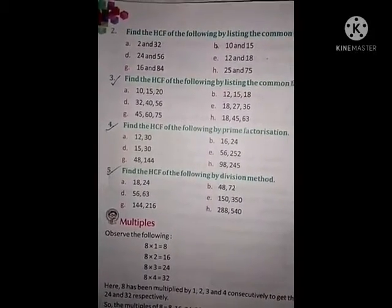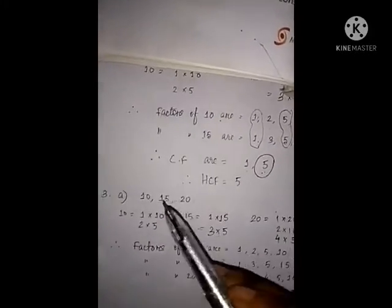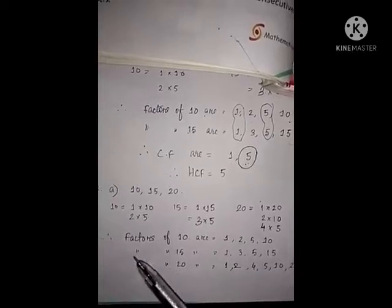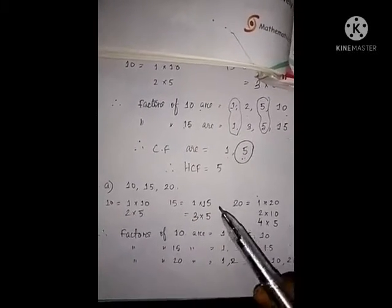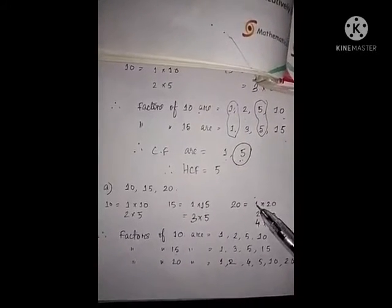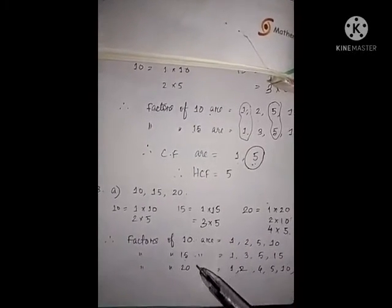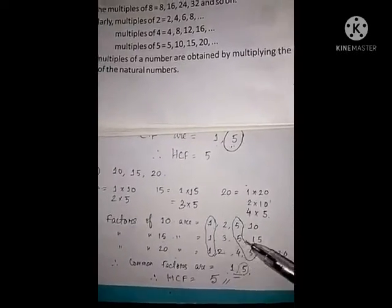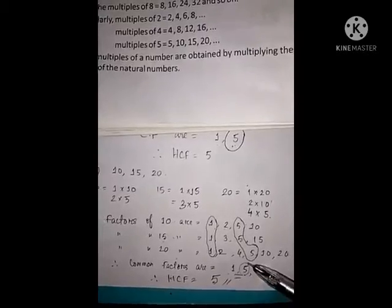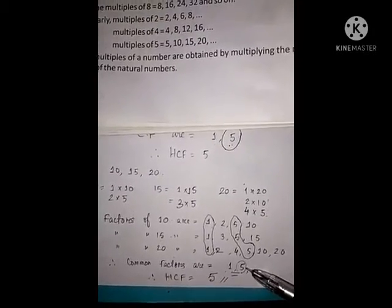Let's take Example A. Using multiplication, I found the factors of 10, 15 and 20. Factors of 10 are 1, 2, 5 and 10. Factors of 15 are 1, 3, 5 and 15. Factors of 20 are 1, 2, 4, 5, 10 and 20. The common factors among all three numbers are 1 and 5. Between 1 and 5, the greatest is 5. Therefore, the greatest number is the HCF, so HCF is equal to 5.